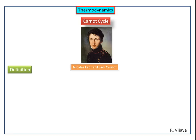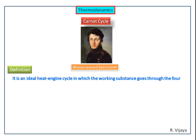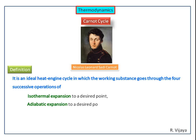The Carnot cycle is an ideal heat engine cycle in which the working substance goes through four successive operations: isothermal expansion, adiabatic expansion, isothermal compression, and adiabatic compression, back to its initial state.